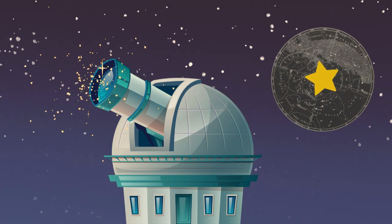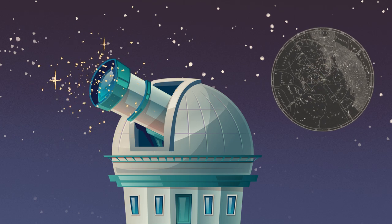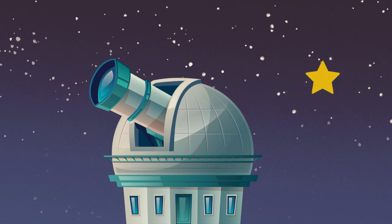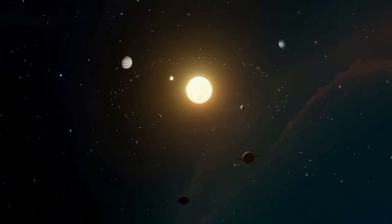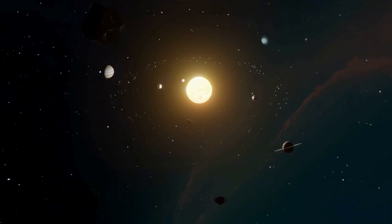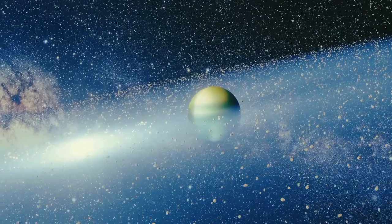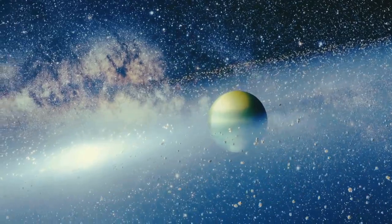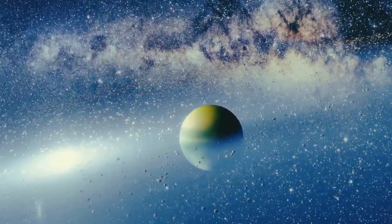Ulug Beg built one of the best observatories in the world and made very accurate maps of the stars. He helped people understand how the stars and planets move. Thanks to his work, we know so much more about our universe today.